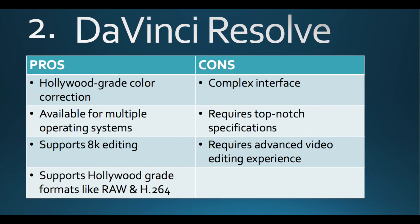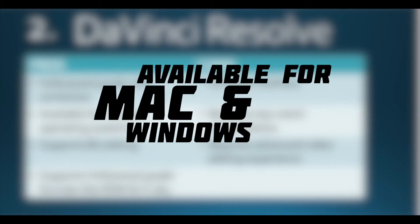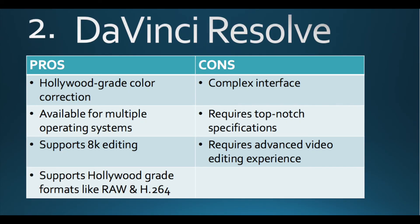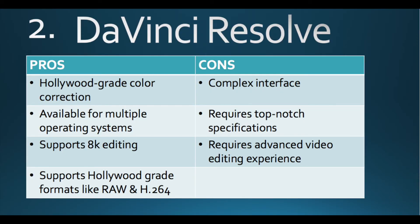The second software in this list is DaVinci Resolve. The software is free and has two versions: DaVinci Resolve and DaVinci Resolve Studio. We are going to be focusing only on DaVinci Resolve, which is free. It is available for Mac and Windows. It supports 8K editing and Hollywood-grade formats such as RAW and H.264, and has Hollywood-grade color correction features. Overall, like HitFilm Express, it is a Hollywood-grade video editing software available for free.